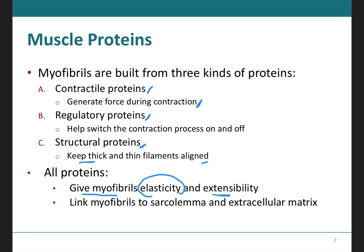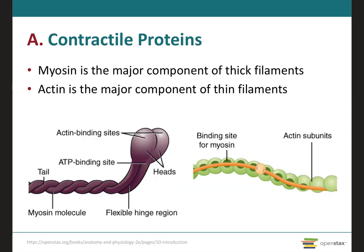These proteins will also be important because they will link the myofibrils to the sarcolemma — remember that's the plasma membrane of the muscle cells — and to the extracellular matrix. Let's cover first the contractile proteins in muscles, which are again the myosin and the actin, and they are the components that will form the thick and thin filaments of the sarcomere. The myosin is going to function as the motor protein and will be present in all three types of muscle tissue: cardiac, smooth, and skeletal. In fact, there are at least 15 different types of myosin proteins, all having to do with movement.